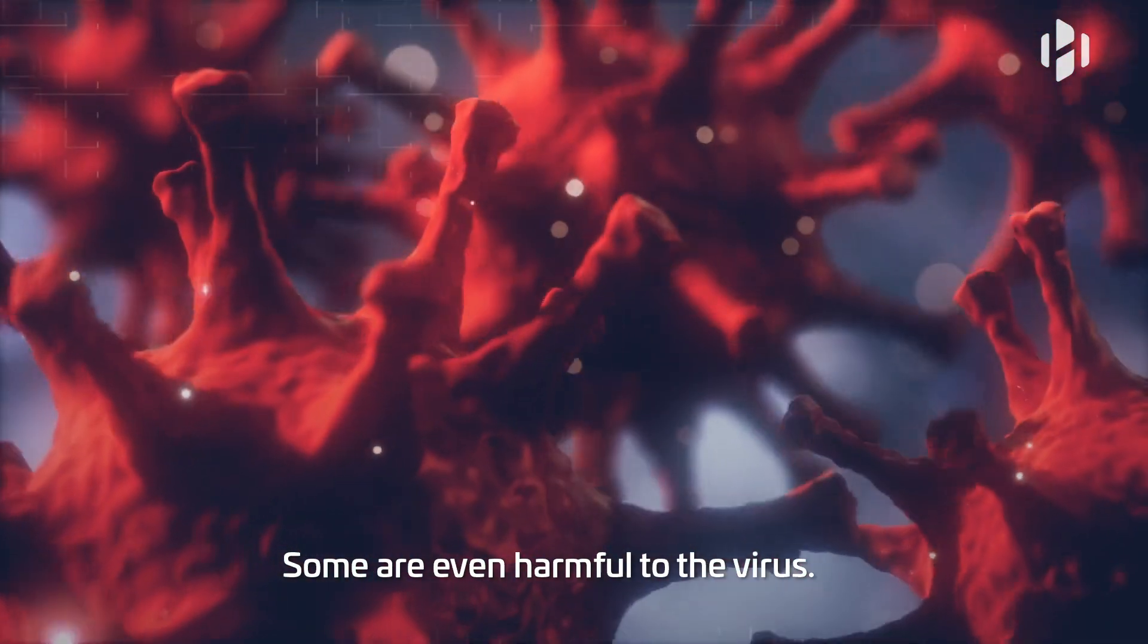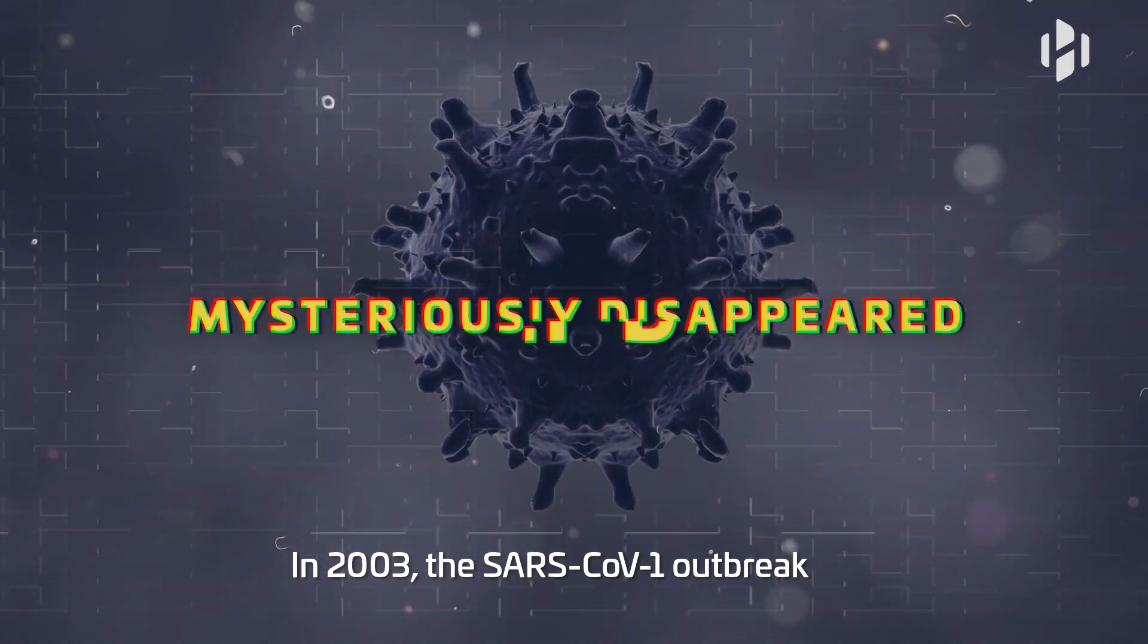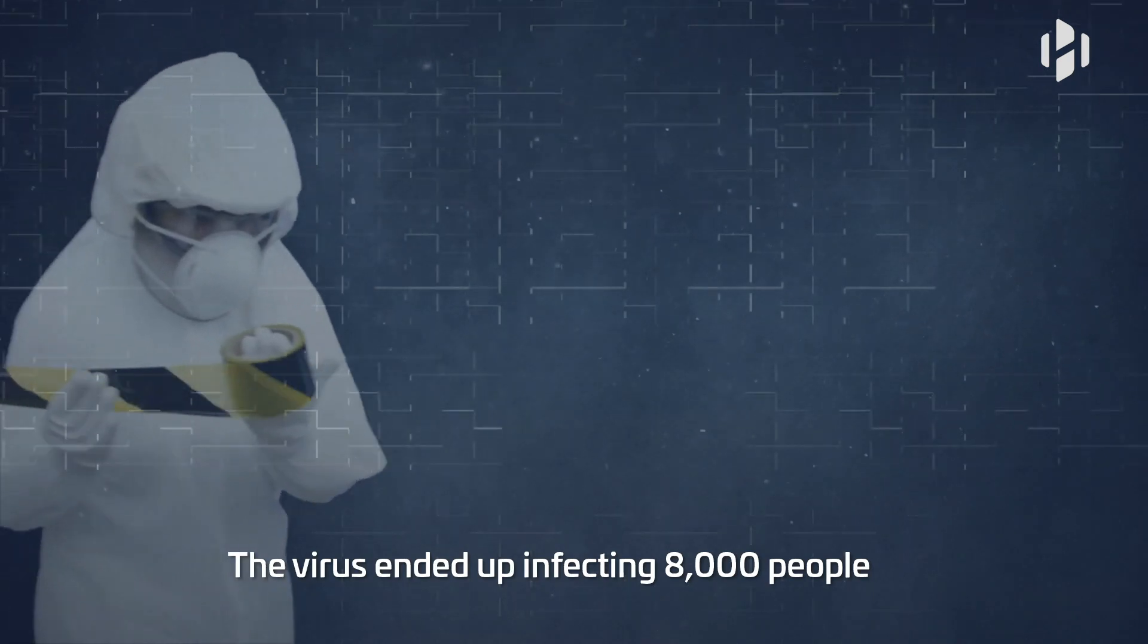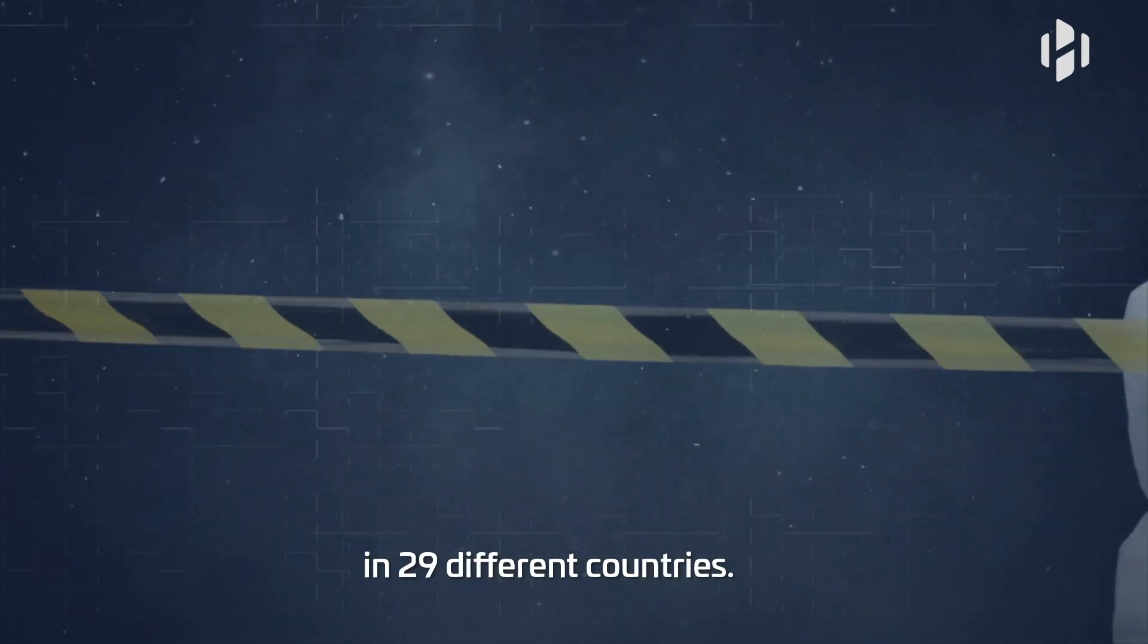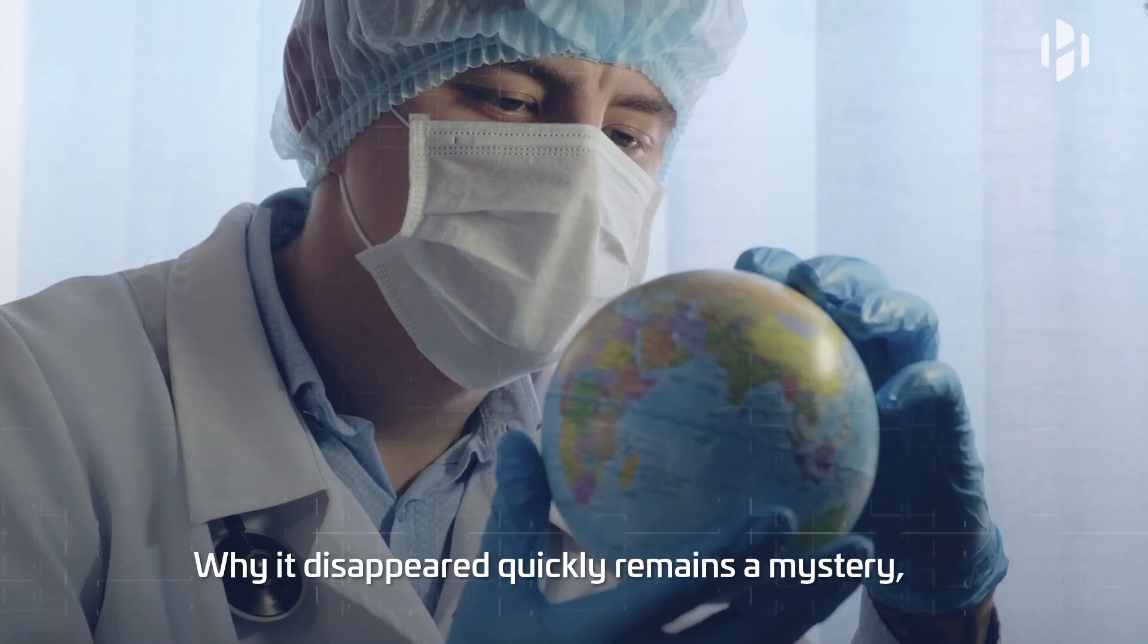In 2003, the SARS-CoV-1 outbreak mysteriously disappeared. The virus ended up infecting 8,000 people and killing 700 patients in 29 different countries. Why it disappeared quickly remains a mystery.